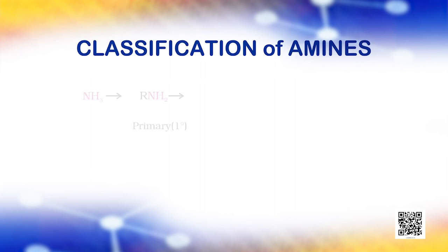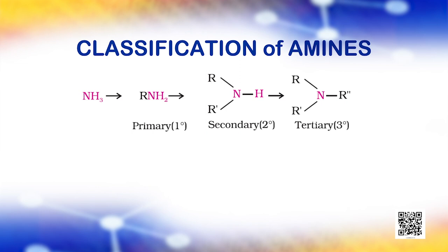Amines are classified as primary, secondary, and tertiary depending upon the number of hydrogen atoms replaced by alkyl or aryl groups in ammonia molecule. If one hydrogen atom of ammonia is replaced by R, that is the alkyl group, or Ar, that is the aryl group, we get RNH2 or ArNH2, a primary amine.